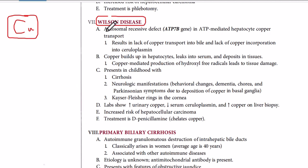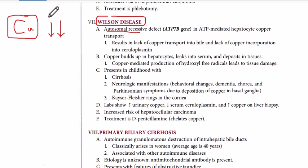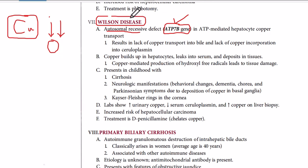It is an autosomal recessive condition — a genetic condition which is passed from the parents to the offspring. This disease is usually present by birth. The patient must get one copy from each parent to have this disease, and it is a defect in a gene called the ATP7B gene.